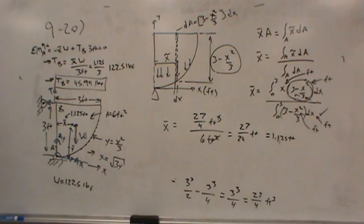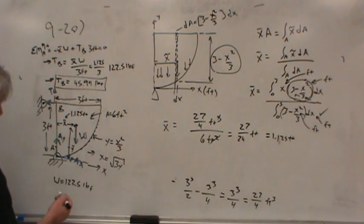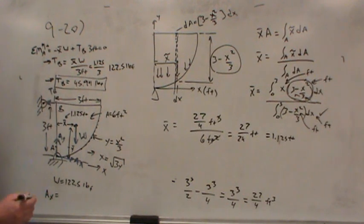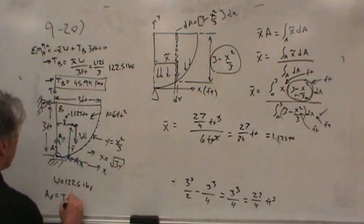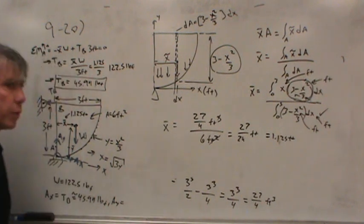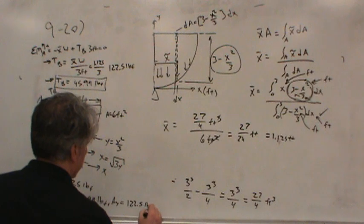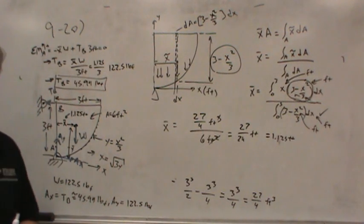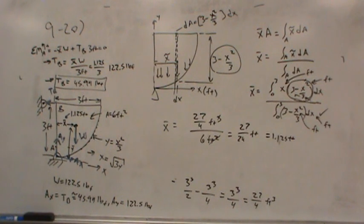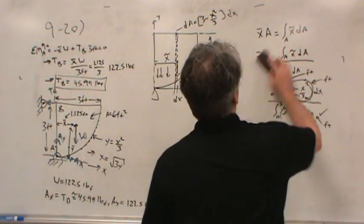So far I haven't needed y-bar. To get Ax: sum of forces in x equals zero, so Ax = T_B = 45.94 pounds. Similarly, Ay equals the weight from sum of forces in y — that's 122.5 pounds. We didn't have to find y-bar to solve the problem. They didn't ask us to find y-bar — but we're going to find y-bar anyway, because it's fun.